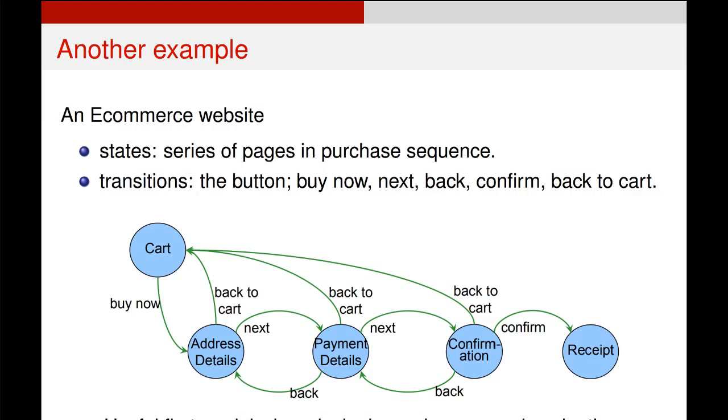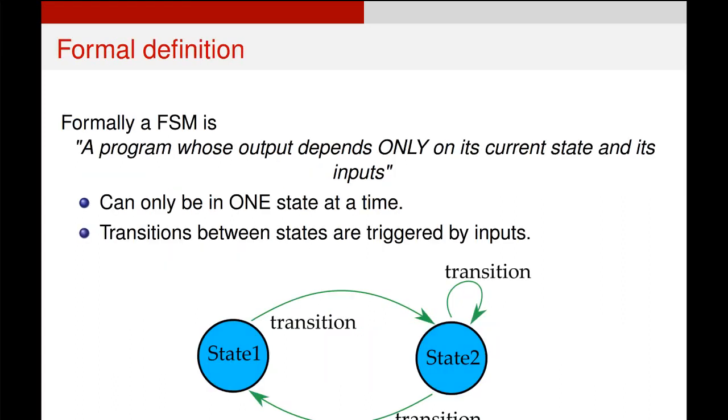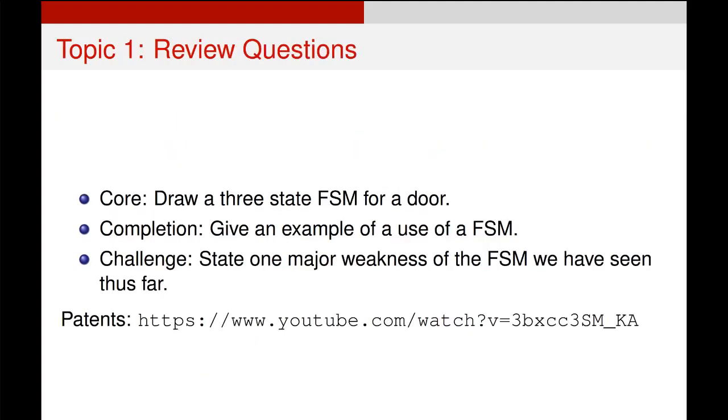So the formal definition of a finite state machine is a program whose output depends only on its input and its current state. The key being finite state machines can only be in one state at a time and their transitions between states are triggered by inputs.